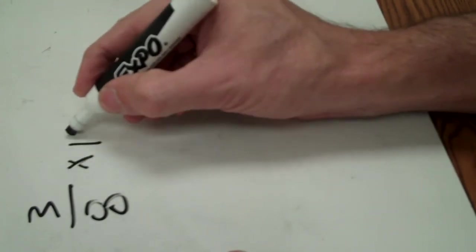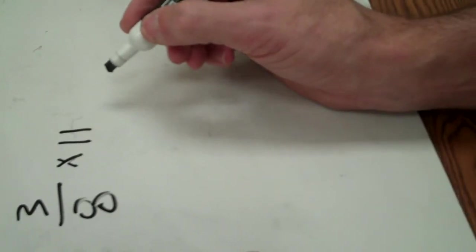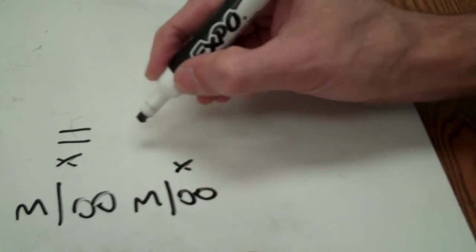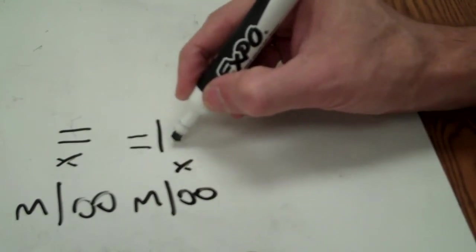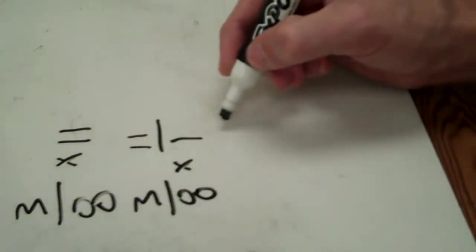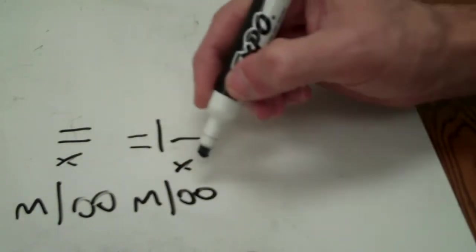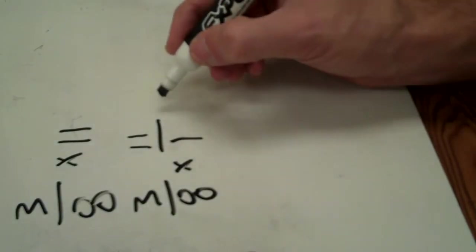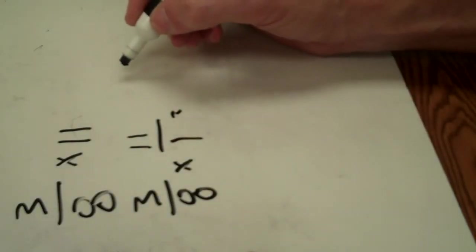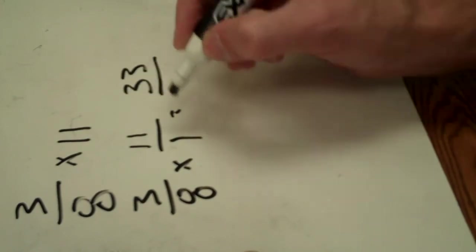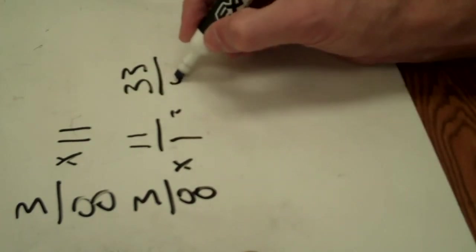Okay. That's the same thing as saying 3/8 times 11 over 1. Look for anything common. Greatest common factor. In fact, there's nothing common here. So, we're just going to have to multiply straight across. 3 times 11 is 33. And then 8 times 1 is 8.